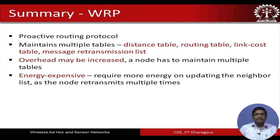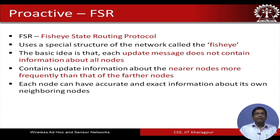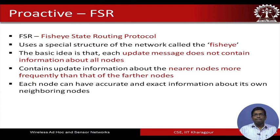Another proactive routing protocol is the FSR, the Fisheye State Routing protocol. The name is due to a special structure of the network which basically looks similar to a fisheye — I will show you how it looks. The basic idea is that each update message does not contain information about all nodes, and FSR states that updates should be done more frequently to nearer nodes than to further nodes.